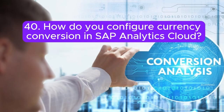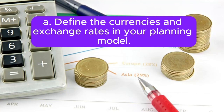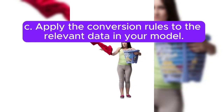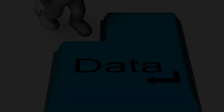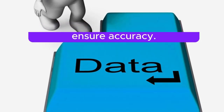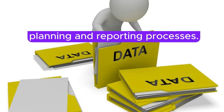Question 40: How do you configure currency conversion in SAP Analytics Cloud? Answer: To configure currency conversion in SAP Analytics Cloud: A. Define the currencies and exchange rates in your planning model. B. Set up the currency conversion rules, specifying the source and target currencies. C. Apply the conversion rules to the relevant data in your model. D. Validate the converted data to ensure accuracy. E. Use the converted data in your planning and reporting processes.